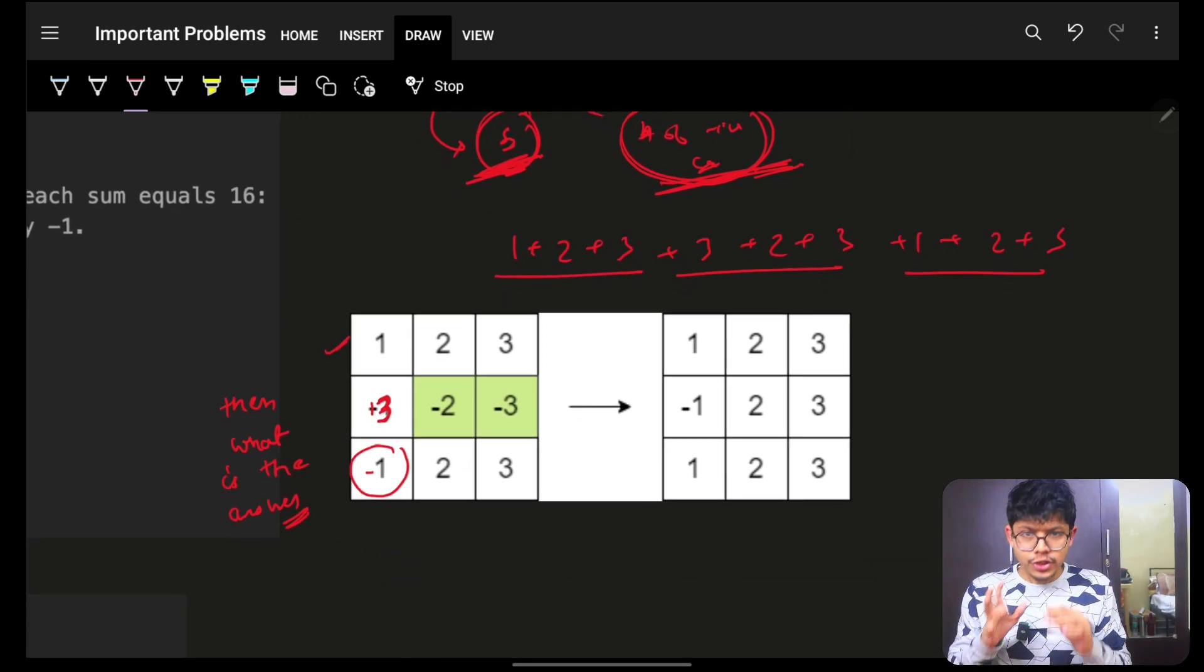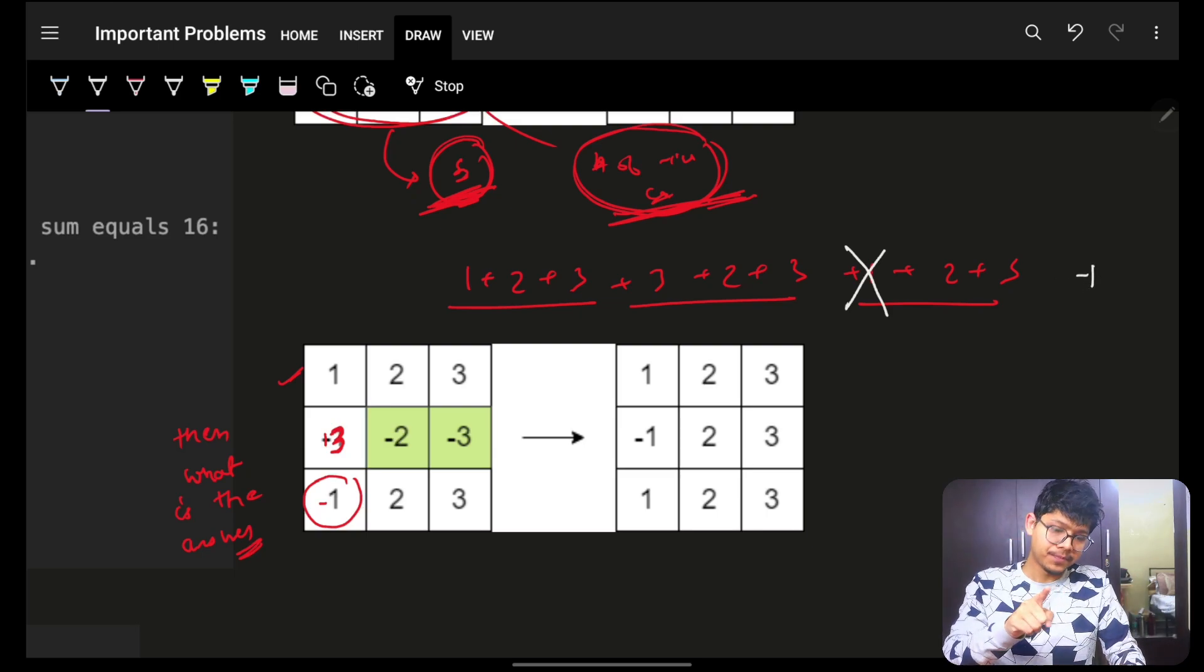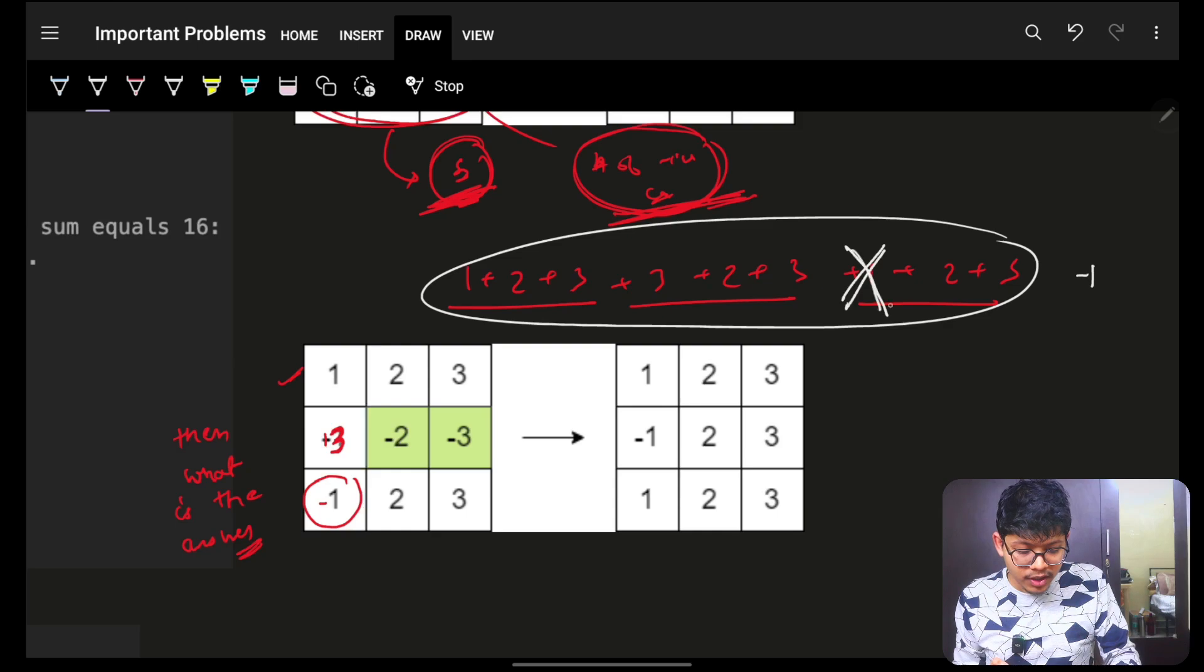Now, when I am saying that I got to know this is the minimum value, so this should become negative, which means the positive contribution here I took, it should go away. On top of it, a negative contribution of the same thing should come up.